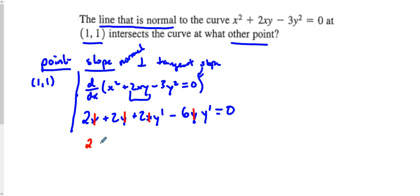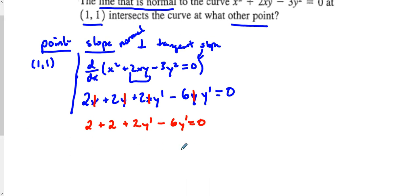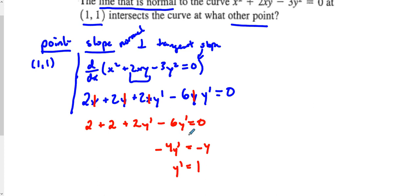What we have is 2 + 2 + 2y′ − 6y′ = 0. Finding our slope, we have 4 on one side and −4y′ on the other, so y′ = 1. So our tangent slope is 1, which means our normal slope has to be the opposite reciprocal, giving us a normal slope of −1.